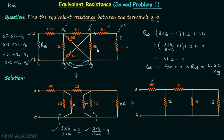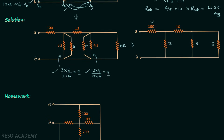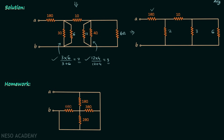I hope this problem was clear. Now we will move on to the homework problem, which is very important in this topic as it introduces more complex networks. In the homework problem, you are required to calculate the resistance between terminal A and terminal B — find R sub AB and post your answer in the comment section.